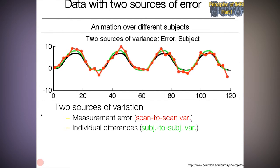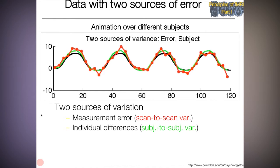So now there are two sources of variation. One's the measurement error, the scan-to-scan variability in red, sampled around the true individual differences, which is the green line. And the green line has true individual differences that vary around the population mean. So only by including both sources of variation in my error term in a statistical model can I generalize to unobserved subjects. And that's what it means to treat subject as a random effect.